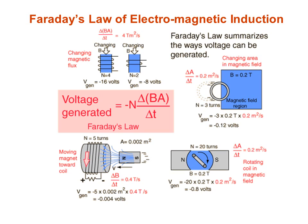The voltage generated by a coil rotating in a magnetic field is equal to the number of turns in the coil times the rate of change of the magnetic flux per unit time. Here, B is the magnetic field intensity, A is the cross-sectional area of the coil, and T is time in minutes or seconds.